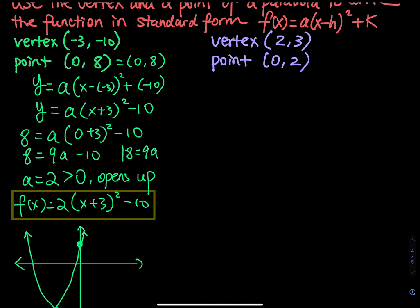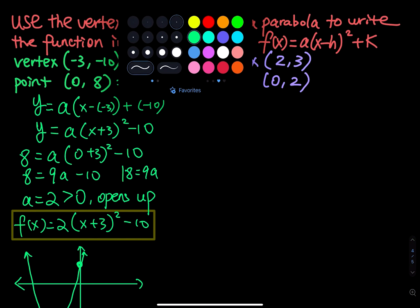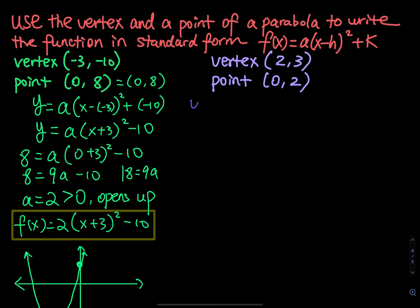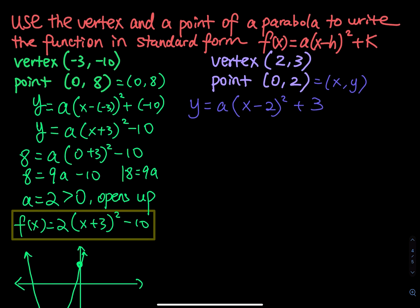Let's do the other problem — vertex and a point. So first we write y equals to a times x minus h square plus k. Using this, the point is x is equal to 0, y is equal to 2. And when y is equal to 2, we have a times x equals to 0 square plus 3.